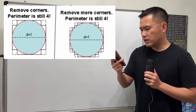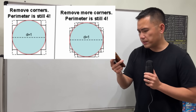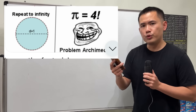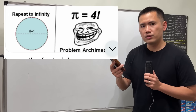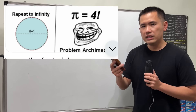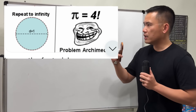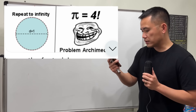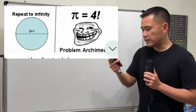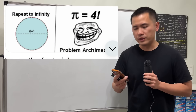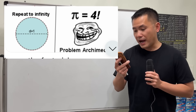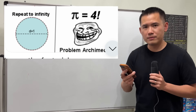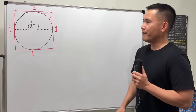And then we're just going to keep on going. If you repeat this process to infinity, it seems like the outside shape will approach the circle. And somehow we can end up with pi is equal to 4. Why though?